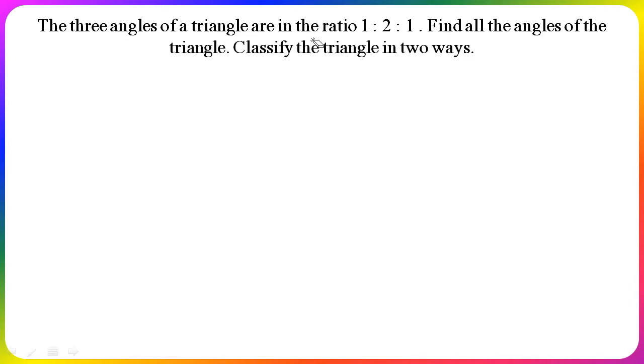The three angles of a triangle are in the ratio 1:2:1. Find all the angles of the triangle. Classify the triangle in two ways.